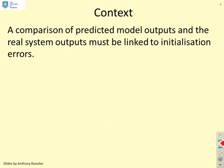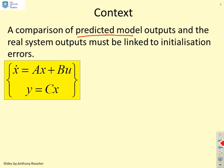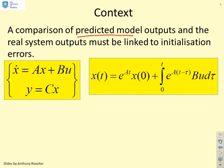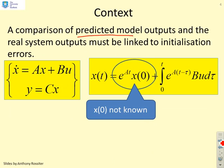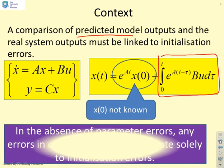Let's do a comparison of predicted model outputs and the real system's outputs. Here again is the same equation and you'll notice there's only one term we don't know. That's e to the At times x of 0 because we're assuming the state was not known, so x of 0 is not known. In terms of x of t, we know this bit, we can calculate that bit, but we don't know the bit linked to the initial condition.